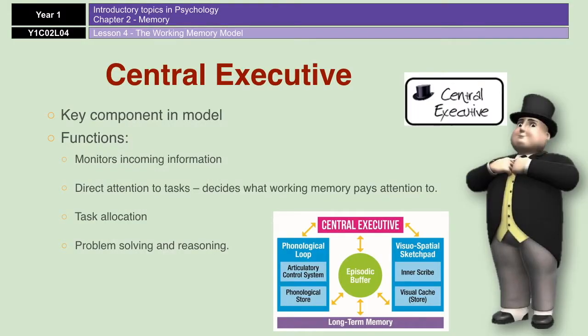The central executive is the big boss of the working memory model. It monitors incoming information from the senses, controls attention, and directs information to the various slave systems — the phonological loop and the visuospatial sketchpad. The central executive can also process information from any sense, so all of that information coming in from the environment goes through the central executive first.